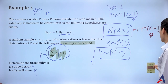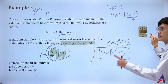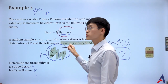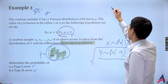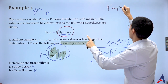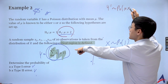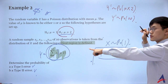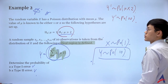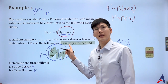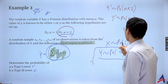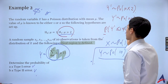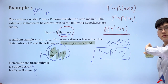For type 2 error, it's the probability of the acceptance region given the true distribution. If the true mean is mu = 2 for each X, then Y' ~ Poisson(20) for 10 variables. The critical region was Y ≥ 15, so the acceptance region is Y ≤ 14. The type 2 error is P(Y' ≤ 14) using the true Poisson(20) distribution.